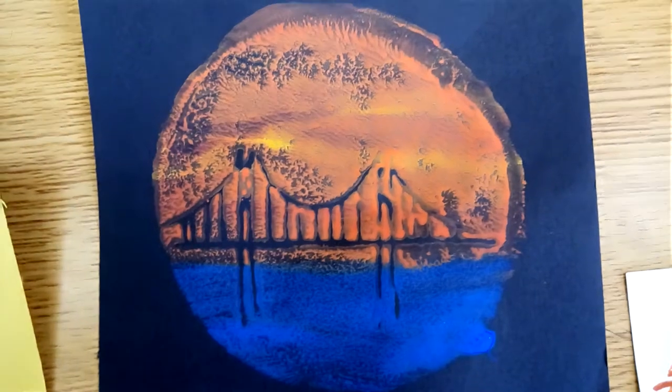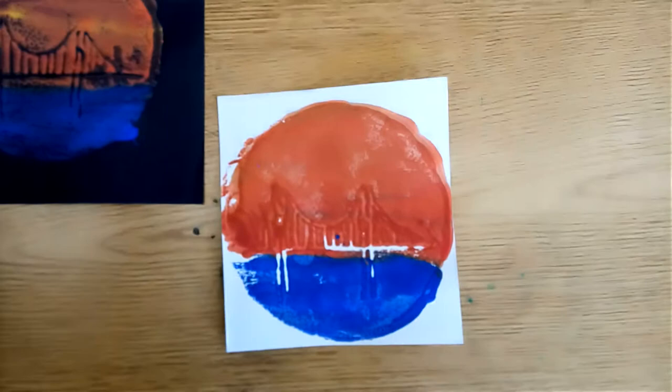Alright, today we're going to talk about printing. This type of print is called a monoprint, because you make one print when you put the paint on one print.